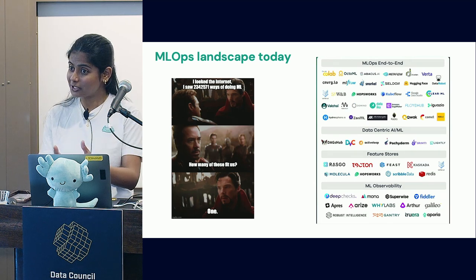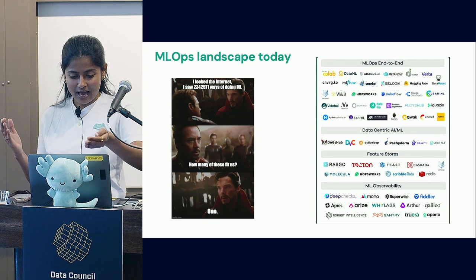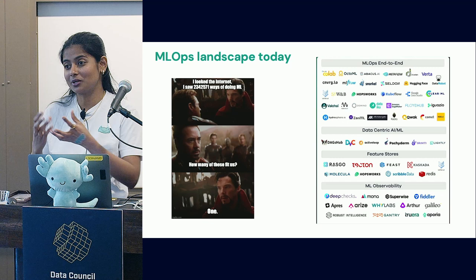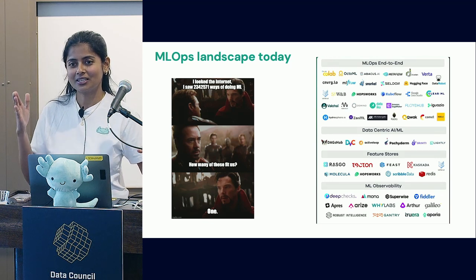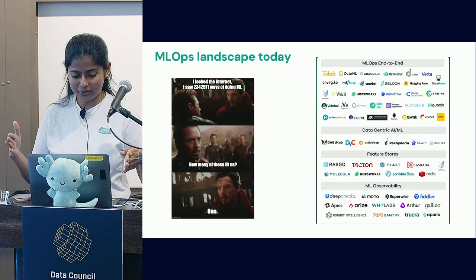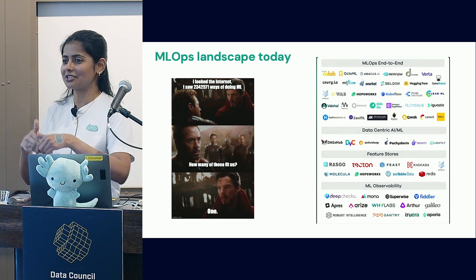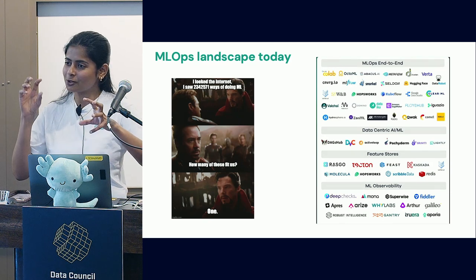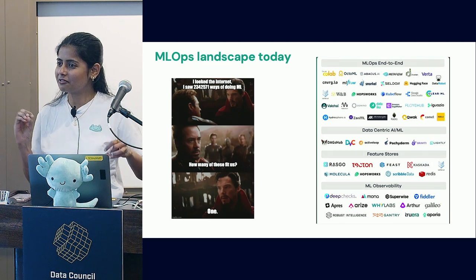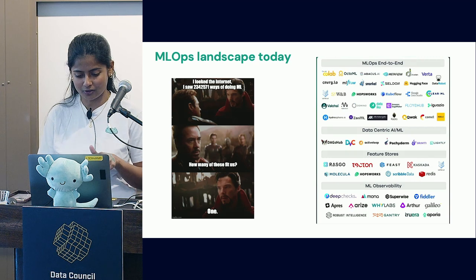Despite all the challenges, we have so many end-to-end tools and data-centric tools that at least promise versioning of all these components. But we're still here talking about those challenges all over again, which means those solutions are very fragmented and we don't have an end-to-end infrastructure for ML experimentation.